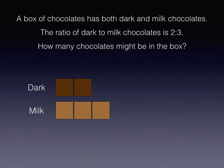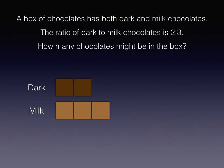It turns out the fewest number of chocolates that there could be in the box would be 5. That is, if each one of these blocks in my diagram represents 1 chocolate, there would be 5 chocolates in the box. But what if each one of the blocks in my diagram represents 2 chocolates? In that case, there would be 10 chocolates in the box.